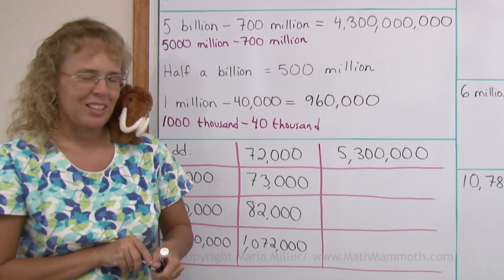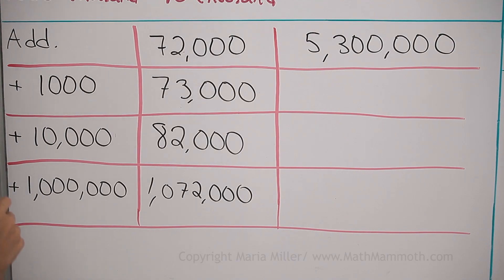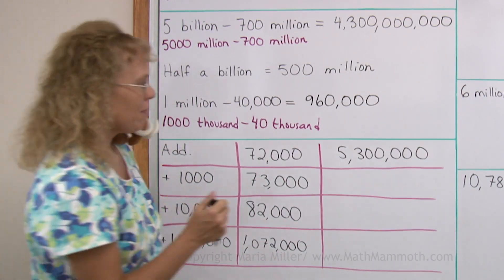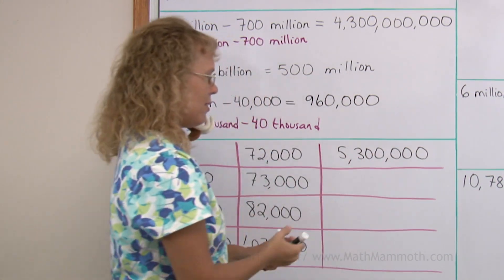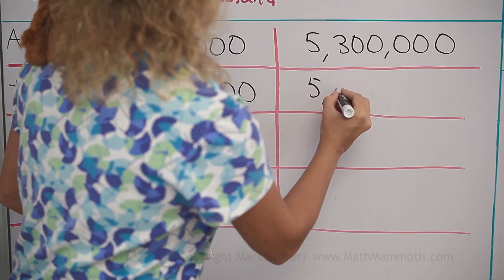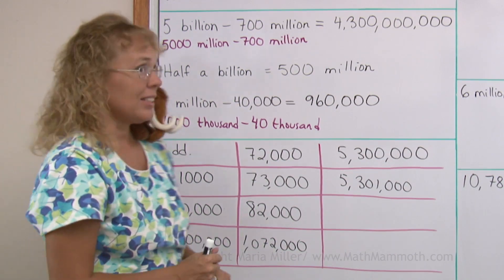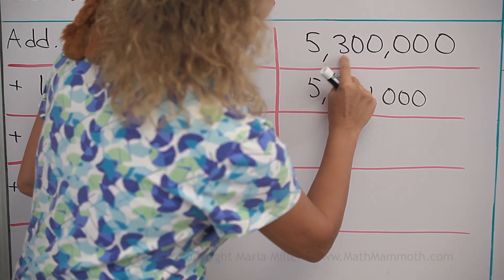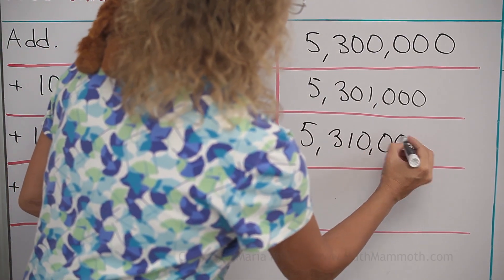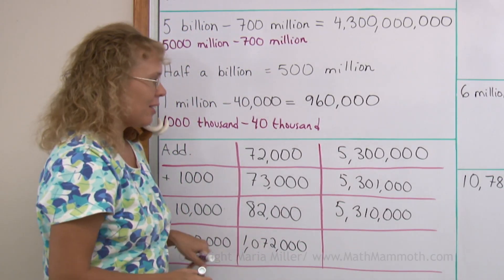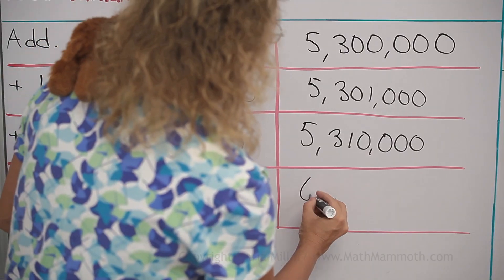Those are really easy additions. Five million three hundred thousand plus one thousand — that one thousand goes into this place — so we get three hundred one thousand here: five million and three hundred one thousand. Next we add ten thousand — ten thousand goes here — three hundred ten thousand, so we have five million three hundred ten thousand. And then lastly plus one million — five million and all that plus one million — we get six million. This was easy.